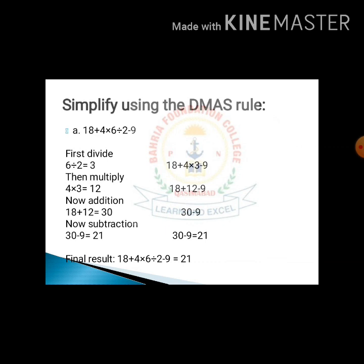In this sum we apply first the division. 6 divided by 2 equals 3. We replace that in the expression. Then we apply the multiplication. When we multiply 4 multiplied by 3 we get the answer 12.